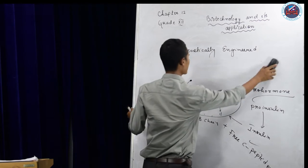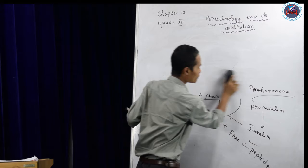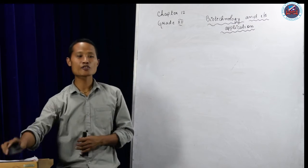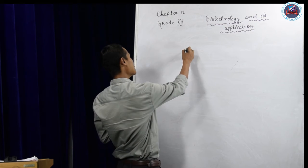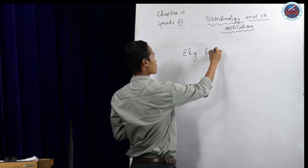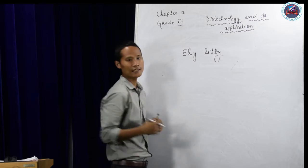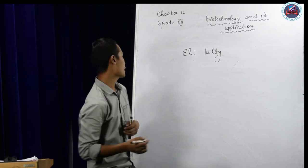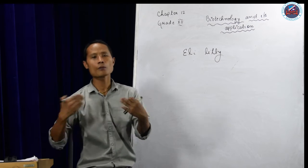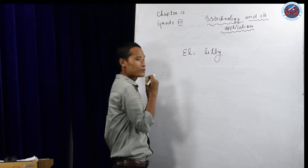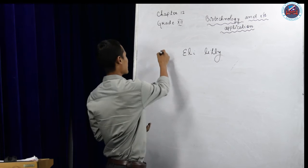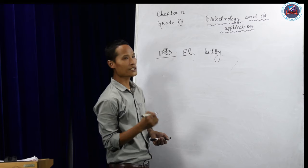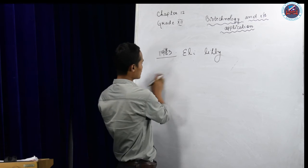Let us discuss the biotechnology or the rDNA technology. In 1983, Eli Lilly, an American company, genetically engineered human insulin.